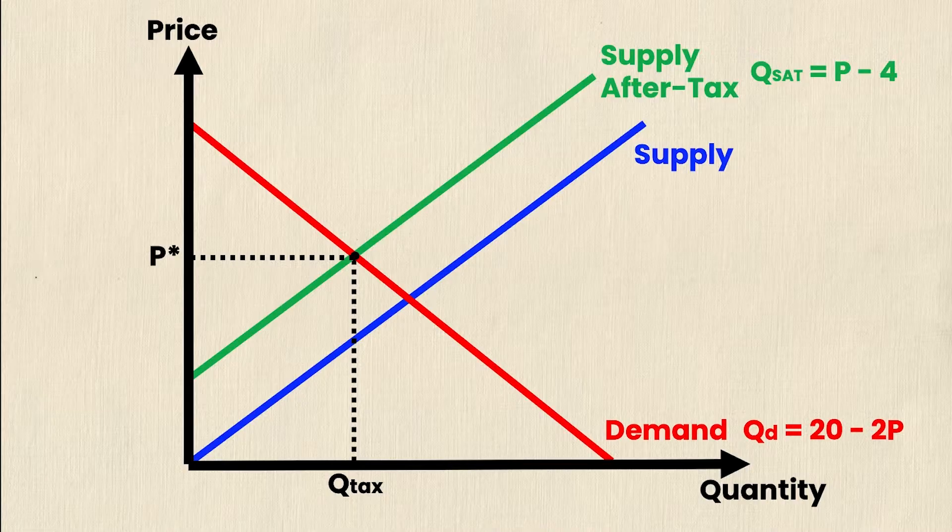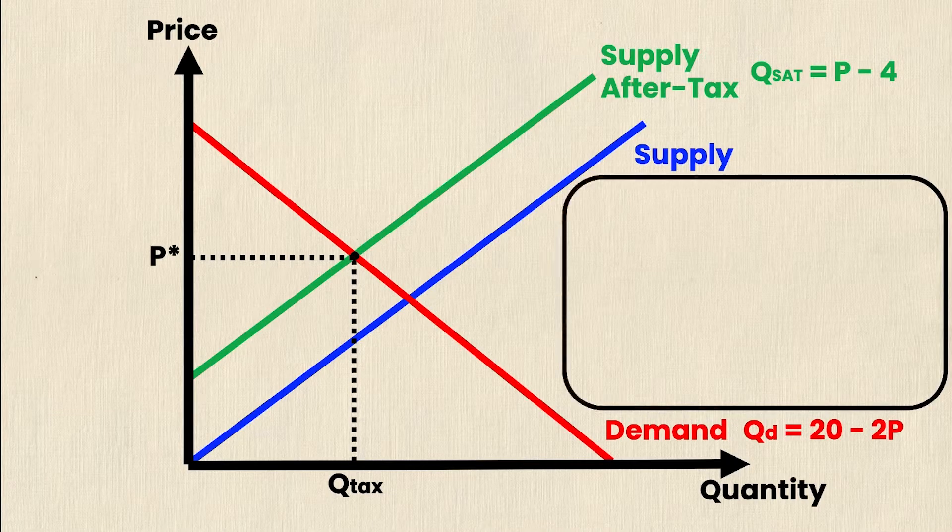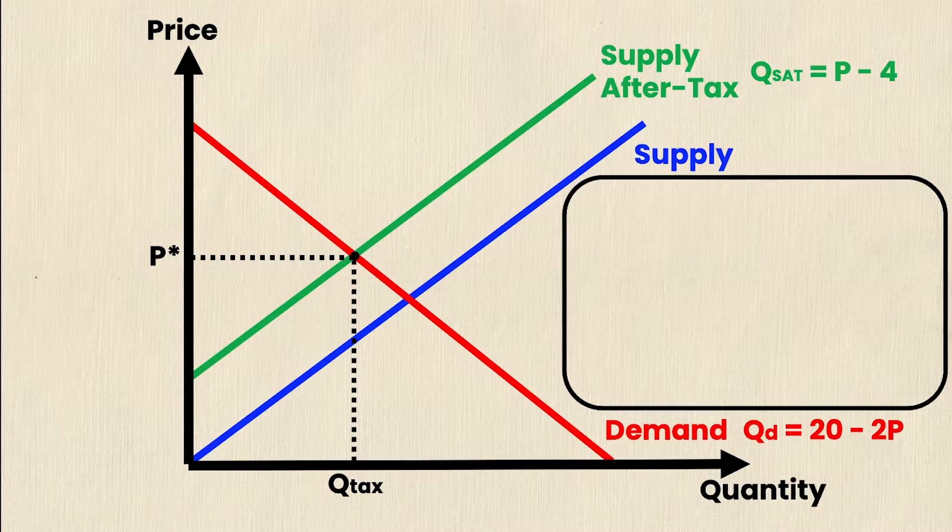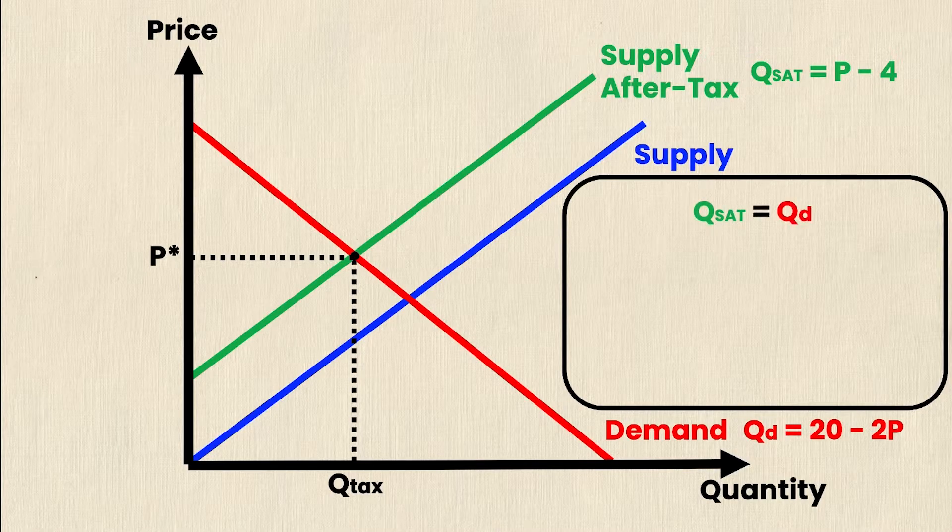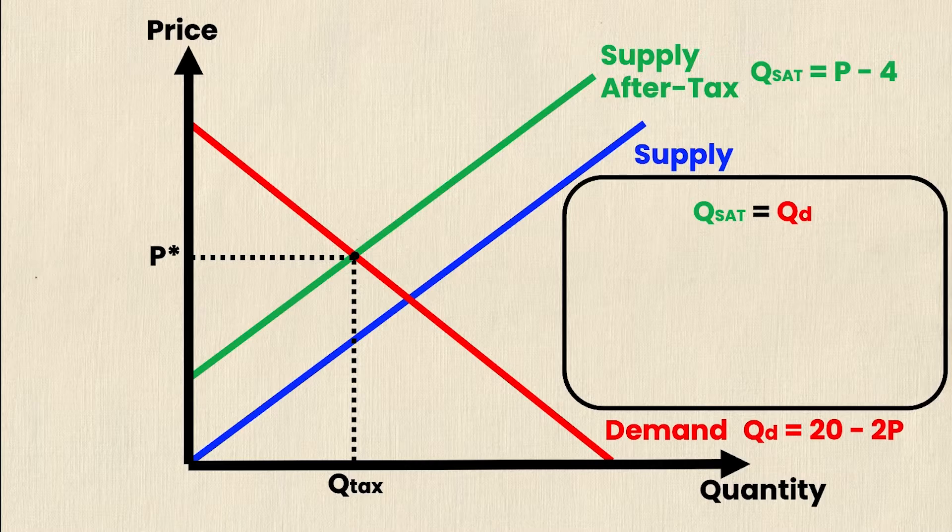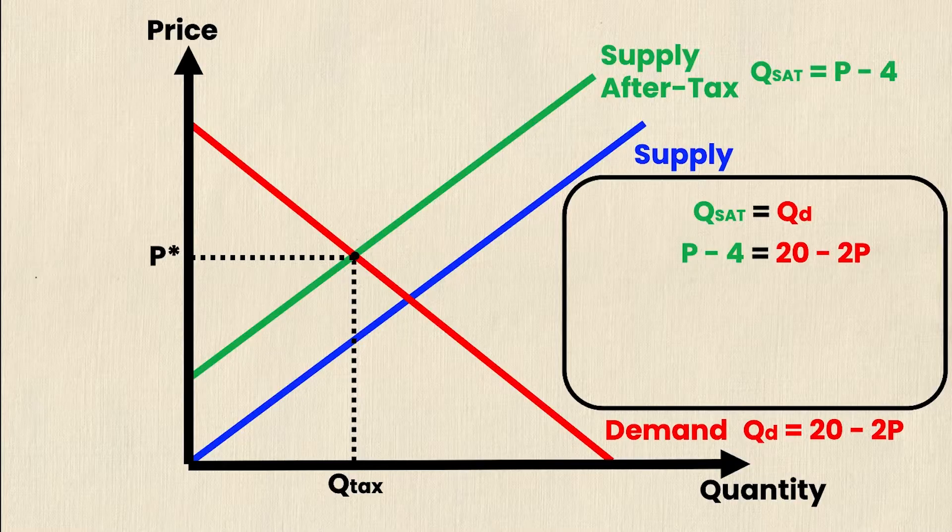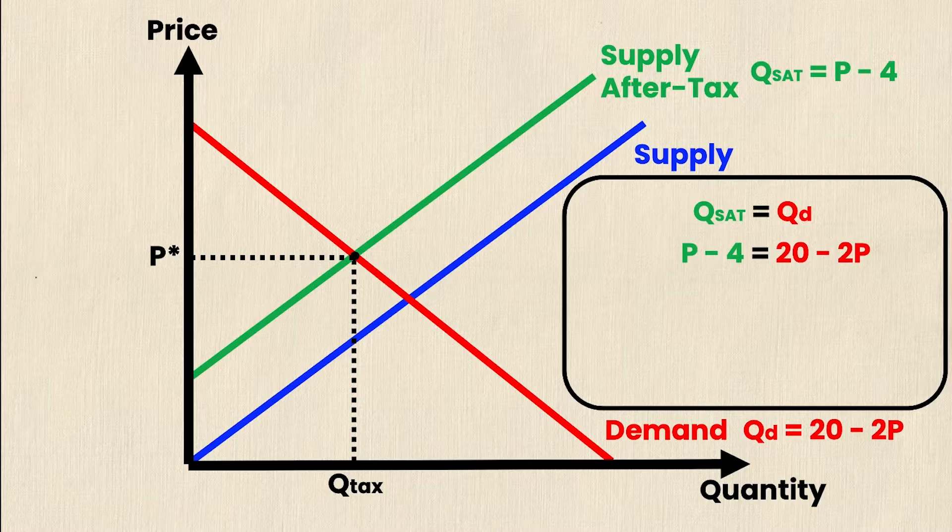So I'm going to calculate the new supply and demand for p star and q tax. I can do this by equating the new supply and demand equations. So q supply after tax is equal to qd. Substituting in, I get p minus 4 is equal to 20 minus 2p. Once again, my demand curve has not changed, so my demand equation hasn't changed either.